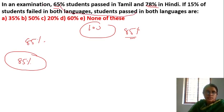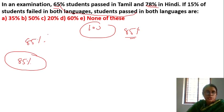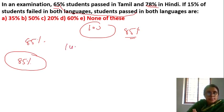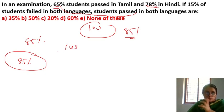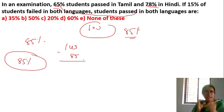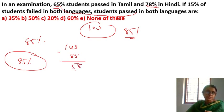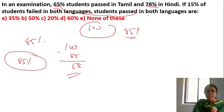65% and 78% added — that is 143 — then we subtract to find who passed in both languages. The answer is 58%.